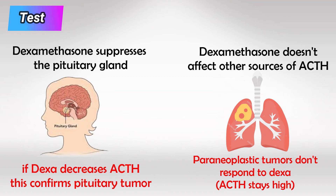So to put it simply, low dose dexamethasone suppresses the pituitary gland, and if giving this medication suppresses the ACTH levels, this patient has Cushing disease. Otherwise, they have Cushing syndrome.